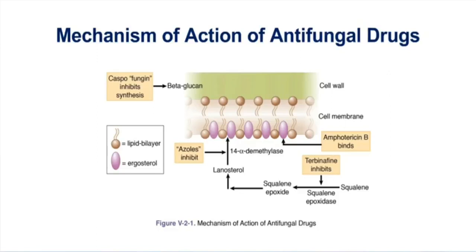Never just memorize the drug name and the enzyme it inhibits — know the pathway. While on a drug like fluconazole, you're going to accumulate lanosterol because you can't form ergosterol. Backing up earlier in that synthesis pathway, terbinafine blocks squalene epoxidase, the enzyme that converts squalene into squalene epoxide. This inhibits ergosterol production, and the specific action results in accumulation of squalene, which is toxic to the fungus.